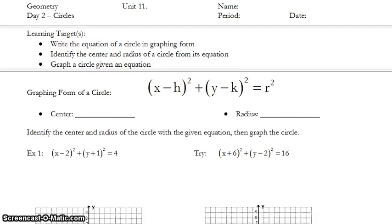Our first conic we are going to study is the circle. The graphing form of a circle is x minus h quantity squared plus y minus k quantity squared equals r squared.